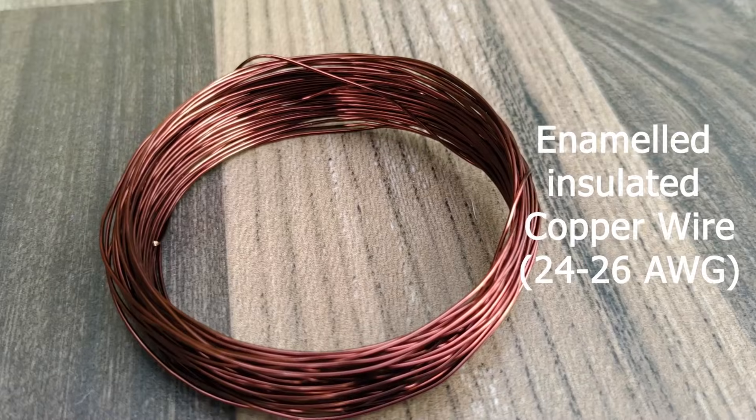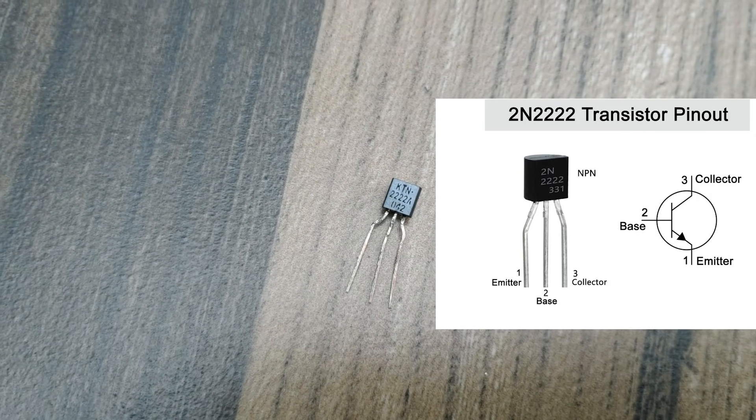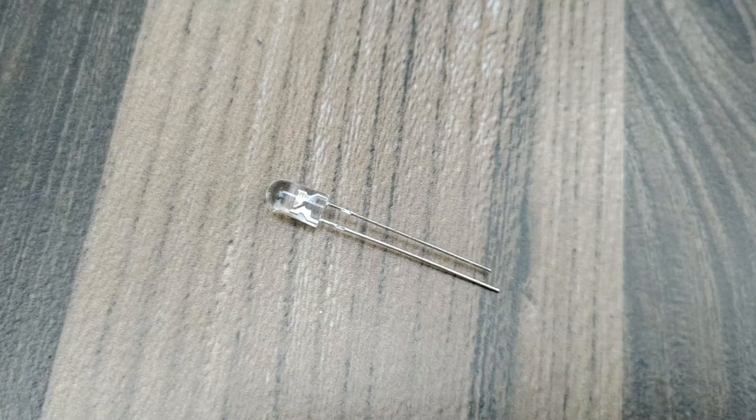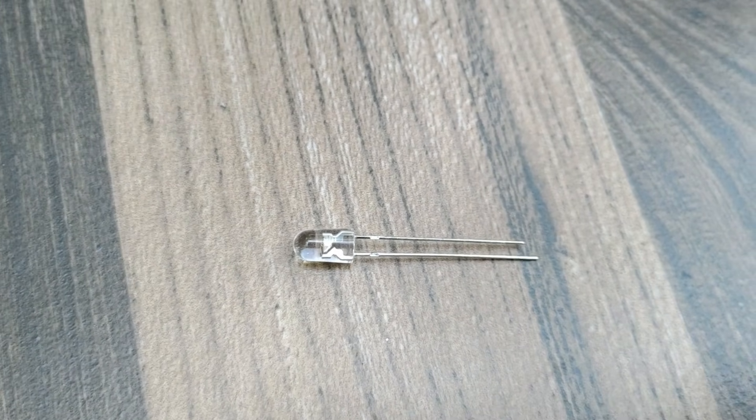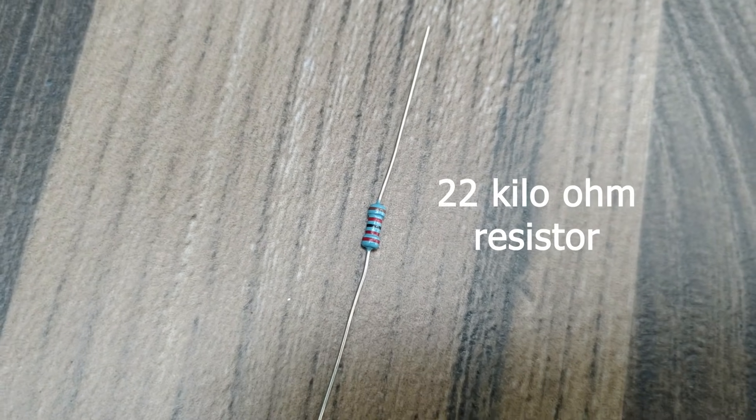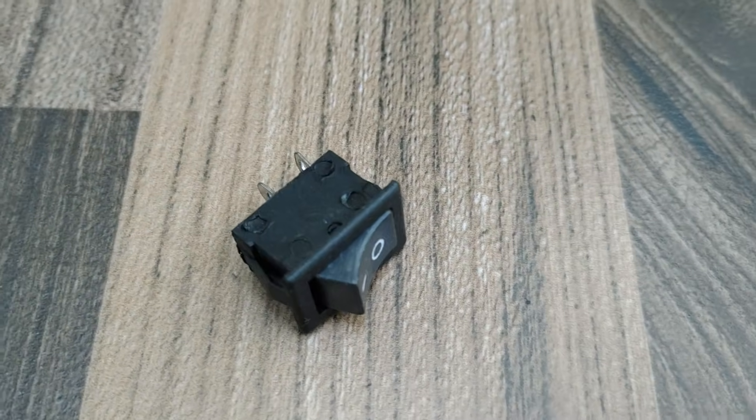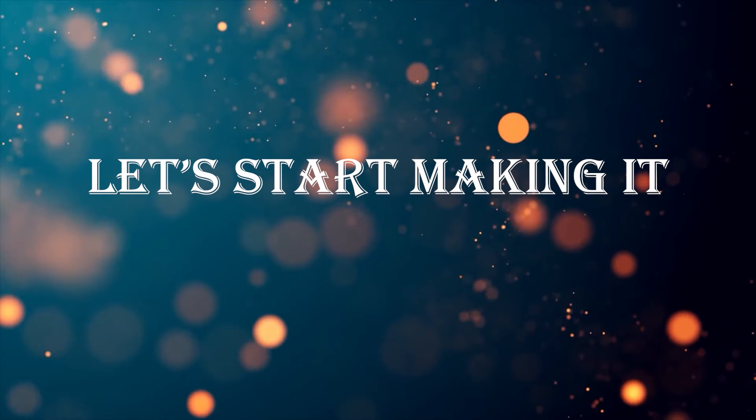For this project, we need enameled copper wire, a 2N2222 transistor, an LED bulb, a 22 kOhm resistor, a 9V battery, and a switch. Now let us learn how to make it.